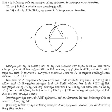Before the modern age and the worldwide spread of knowledge, written examples of new mathematical developments have come to light only in a few locales. From 3000 BC the Mesopotamian states of Sumer, Akkad and Assyria, together with ancient Egypt and Ebla began using arithmetic, algebra and geometry for purposes of taxation, commerce, trade and also in the field of astronomy and to formulate calendars and record time.